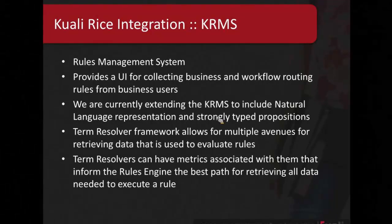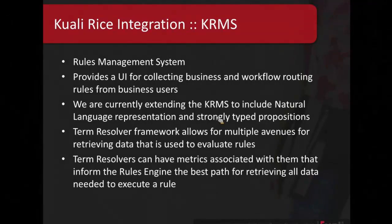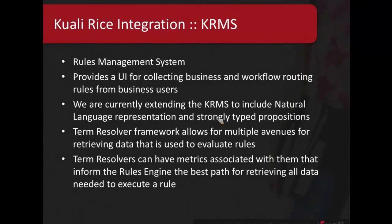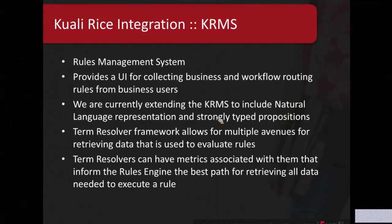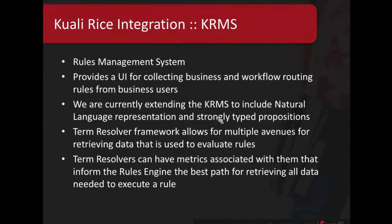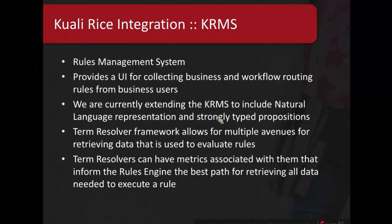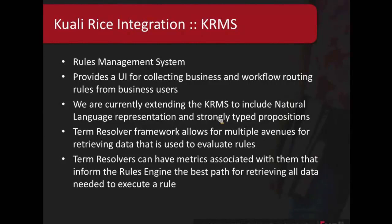The KRMS has a term resolver framework which allows for multiple avenues for retrieving data used to evaluate rules. These are just method calls — given a term type and some parameters, it knows how to source that information. You could have multiple term resolvers for the same type and it can figure out the best path. You can associate metrics with those paths, either hard-coding them up front or potentially doing real-time analysis down the road. There is an option for doing some evaluation of best path to get all the data needed to execute a rule.